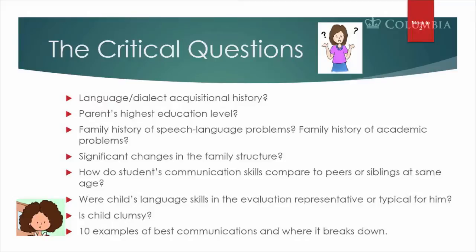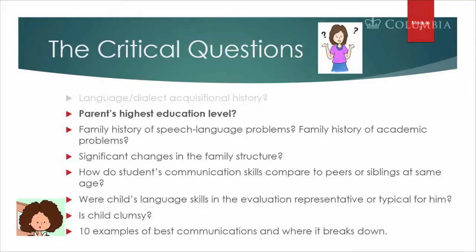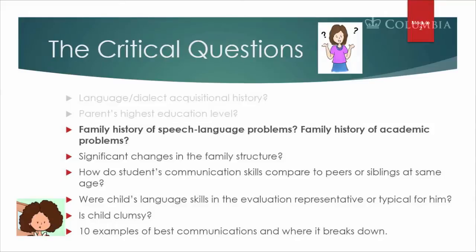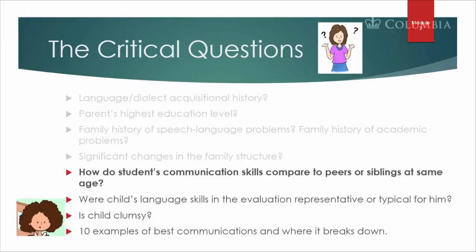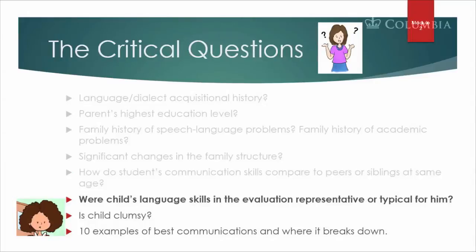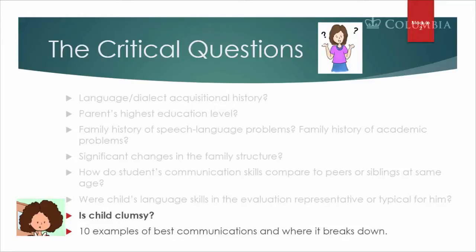The critical questions: Language, dialect, acquisitional history. Parent's highest educational level. Parent history of speech and language problems. Family history of academic problems. Significant changes in the family structure. How do the students' communication skills compare with peers or siblings when they were the same age? Were the child's language skills in the evaluation representative or typical for him? Is the child clumsy? And please, between the time I first talked to the parent and when I see the parent, give me 10 examples of the best communications of that child and where it might break down.